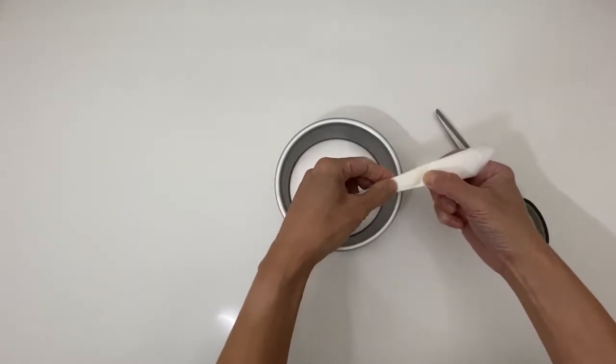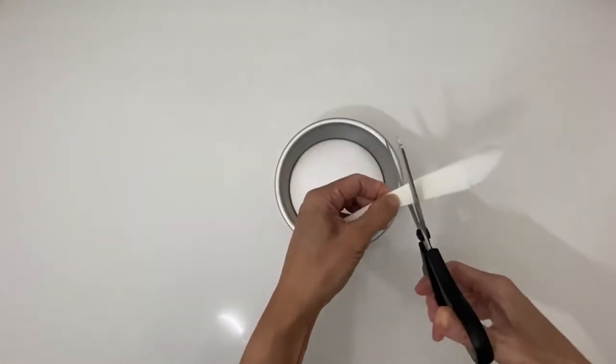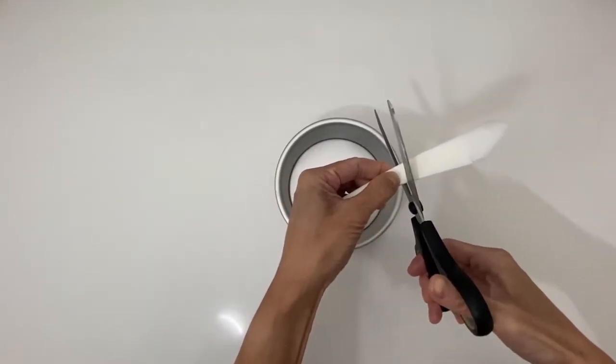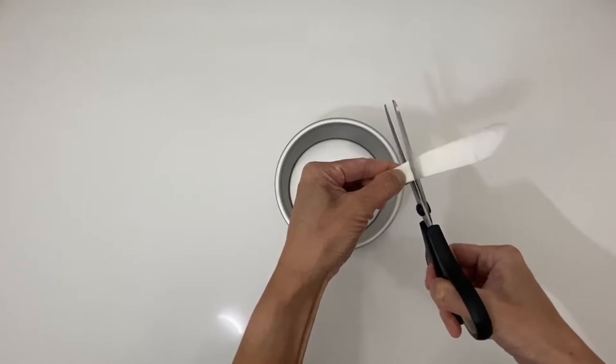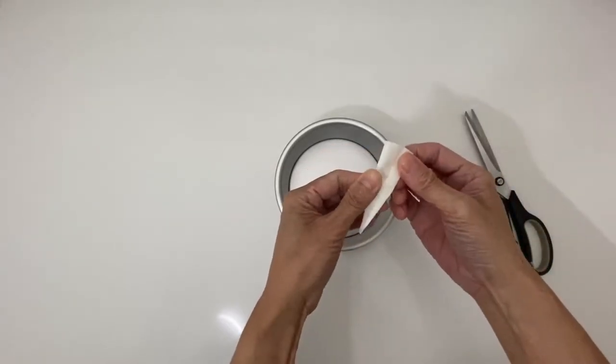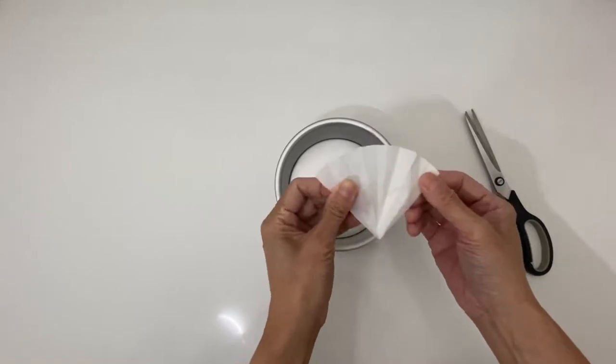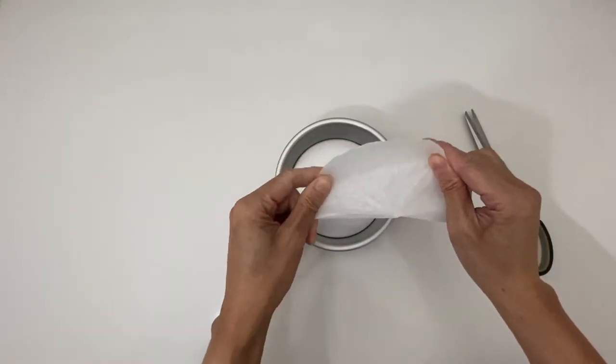Then get your tin. Place the triangle over the center of the tin. I always eyeball it. Then cut the triangle at the edge of the tin. Unfold the triangle. You now have a perfect circle for your baking tin.